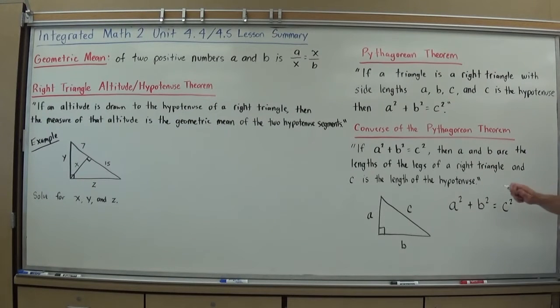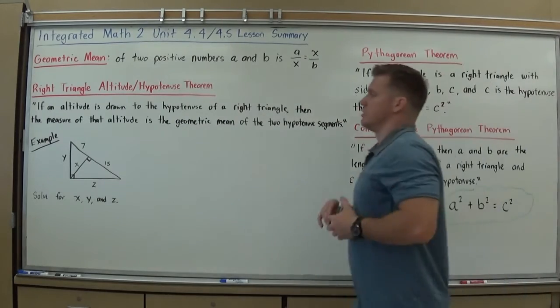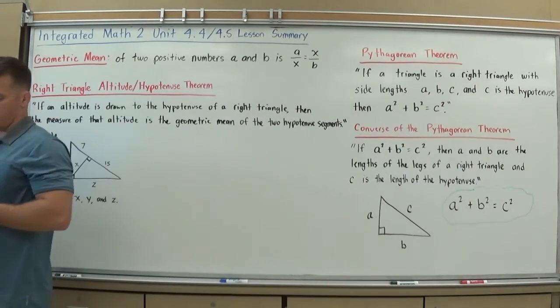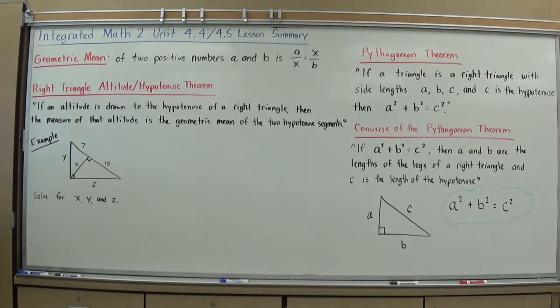So again, make sure you know this. Definitely not something we can forget. A squared plus B squared equals C squared. So that kind of summarizes lesson 4.5. We are now going to be using that in addition to some of the things we learned here in 4.4 to find the missing side lengths in a right triangle. To do that, we are going to need to know a geometric mean.